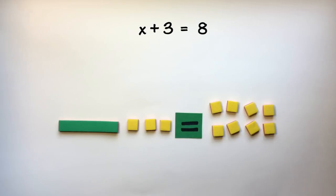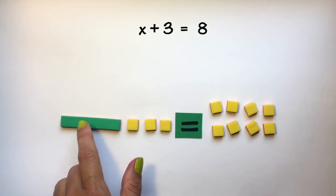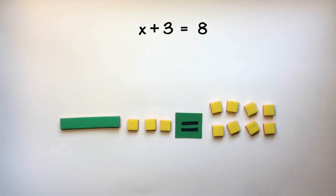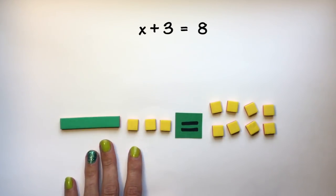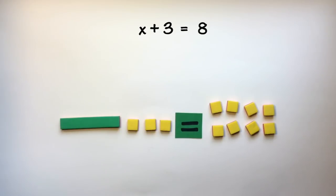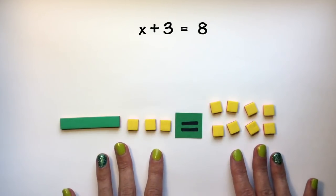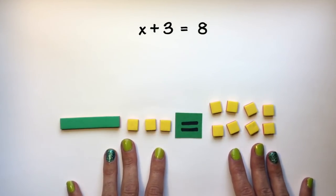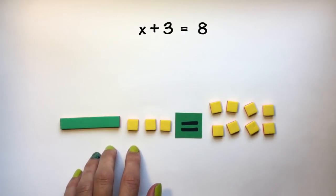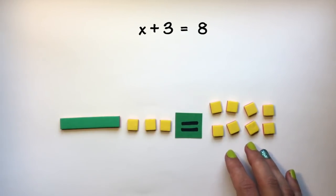Now, my goal is always to isolate my variable. If I want to figure out what x must be equal to, I have to get it by itself on this side of the equation. In order to keep my equation balanced, anything I do to one side of the equation I have to do to the other side of the equation.